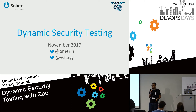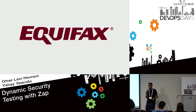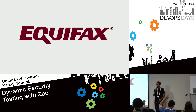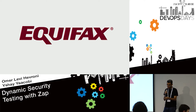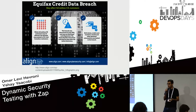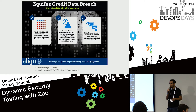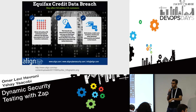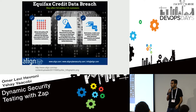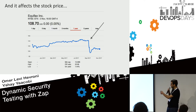I want to start with a story, and like any good security session, it's the story about Equifax. How many of you have heard about Equifax? Not surprising. The Equifax breach was a pretty minor breach — you could say only 143 million US customers affected. It contained first names, last names, and a lot of personal information.